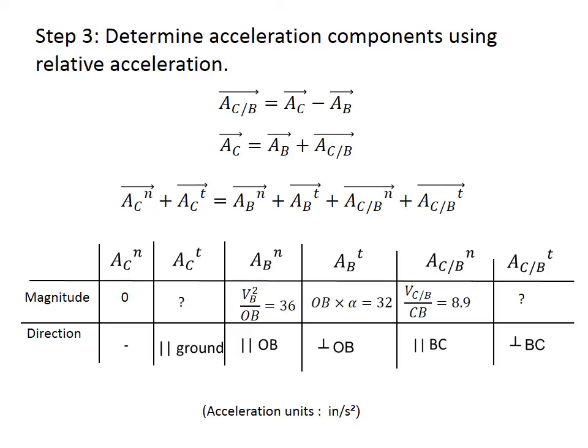Each of these accelerations of points C, B, and the relative acceleration of C versus B is decomposed into its two components — normal and tangential — which are perpendicular to each other, and their resultant gives the total acceleration. It is recommended to determine each of these components separately and record them in a table, where each row shows the magnitude and direction of each component.